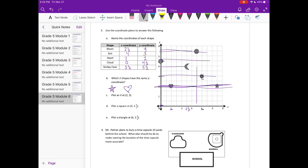Plot an x at two, three. So we're going over two and then up three, so that would be right there. Plot a square at three, two and a half. So here's three, x-coordinate three. Two and a half is right here, and we're plotting a square. Plot a triangle at six, three and a half. So six is all the way over here, and then up to three and a half is right there, and we're plotting a triangle.